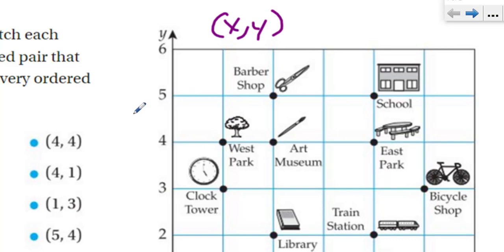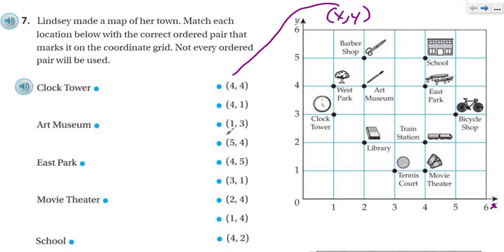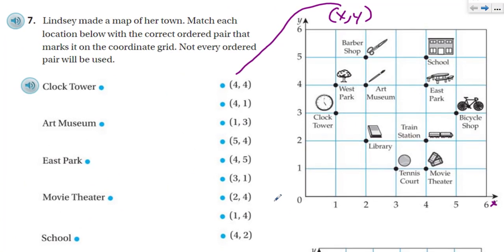When we write a coordinate pair, for example, for this four, that is our x and this is our y. So this coordinate would be one, three — the x is one, the y is three. That's important to know. X comes before y, so we're always going to move across this grid with the x value first, then and only then we go to the y.